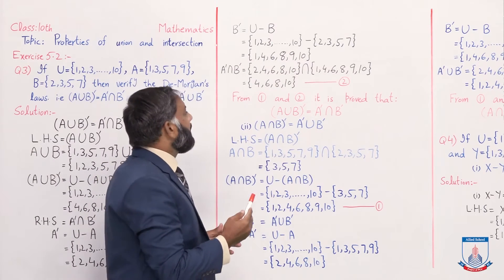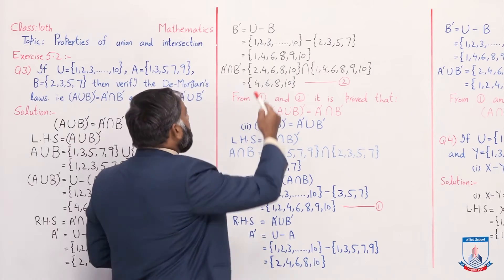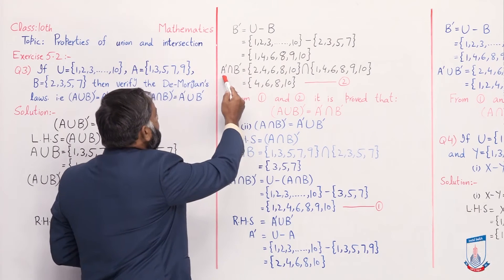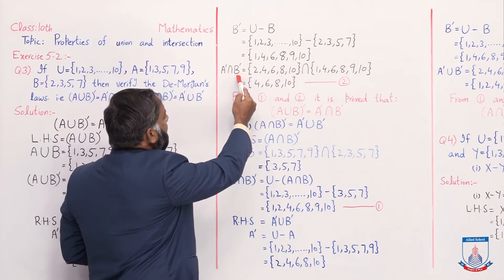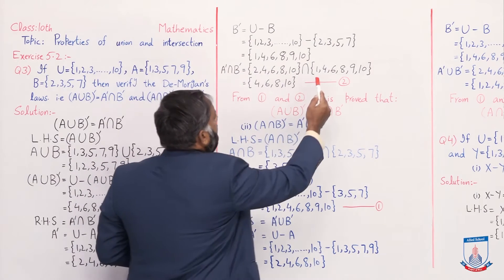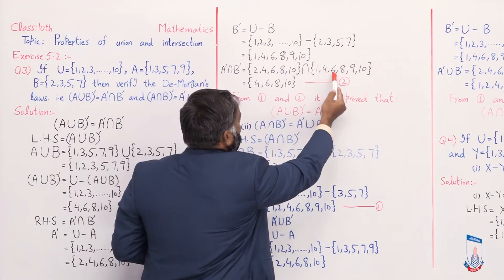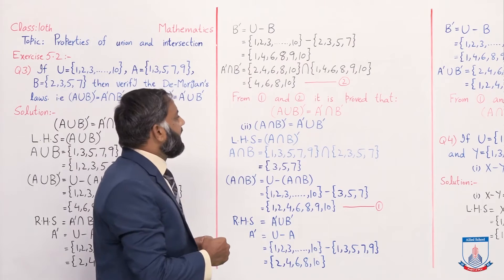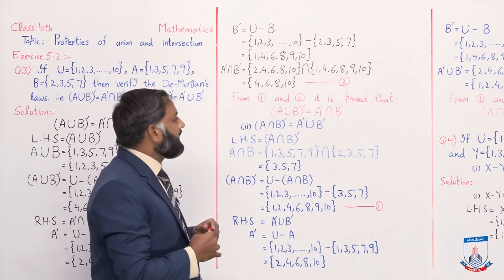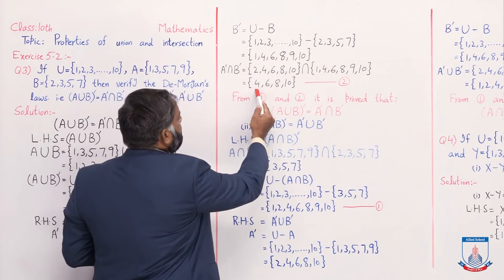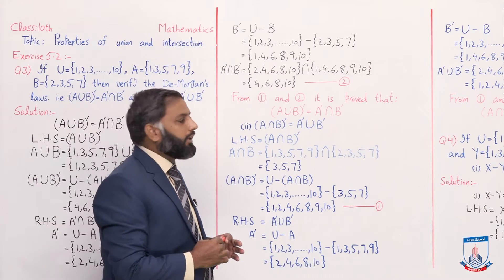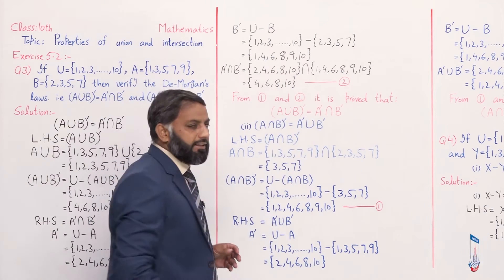We have already found A' and now we found B'. Now we take their intersection: A'∩B'. A' = {2, 4, 6, 8, 10} and B' = {1, 4, 6, 8, 9, 10}. In intersection we write the common elements of both sets. The common elements are {4, 6, 8, 10}. This is our right hand side solved, and we call it equation 2.